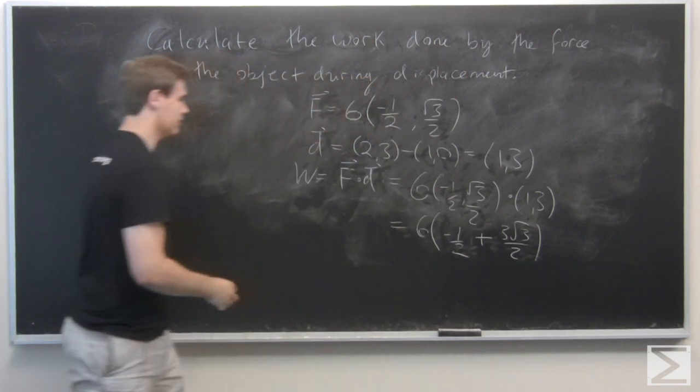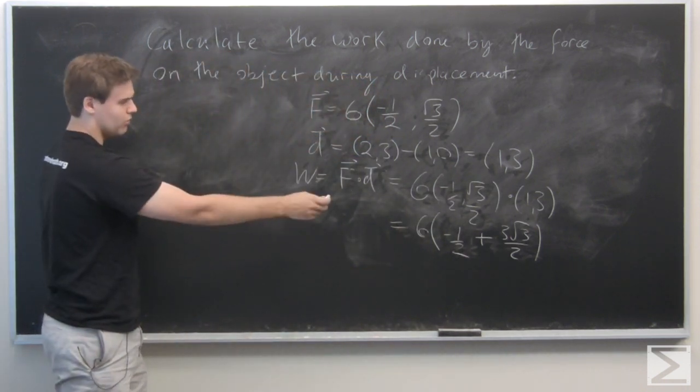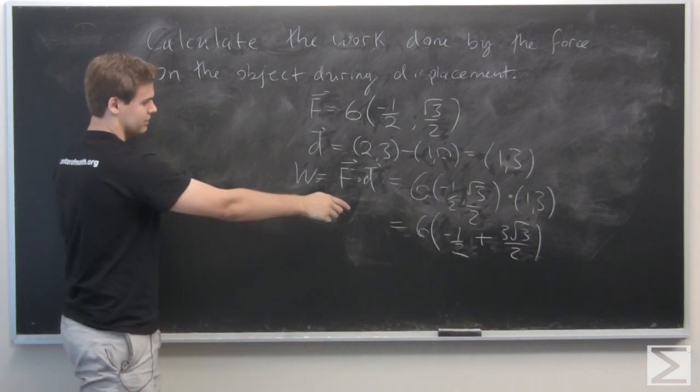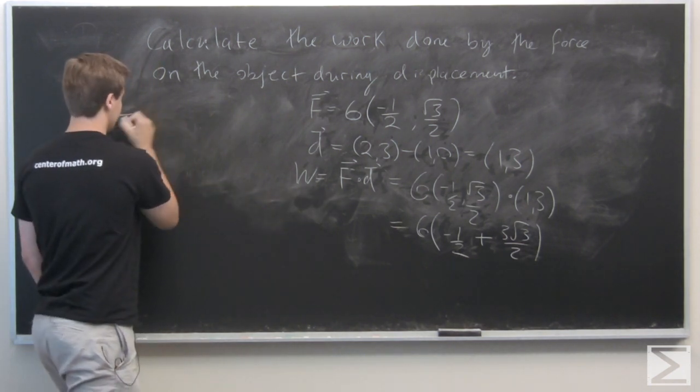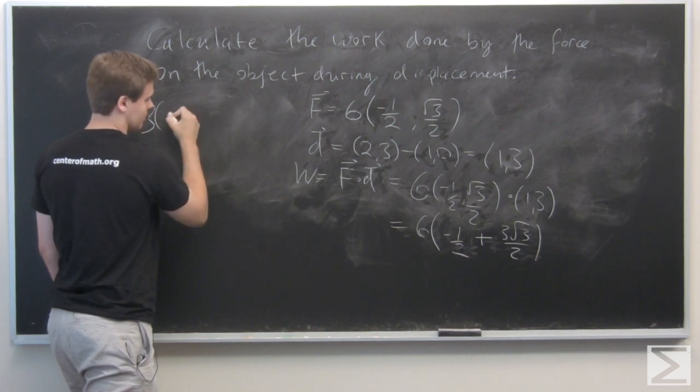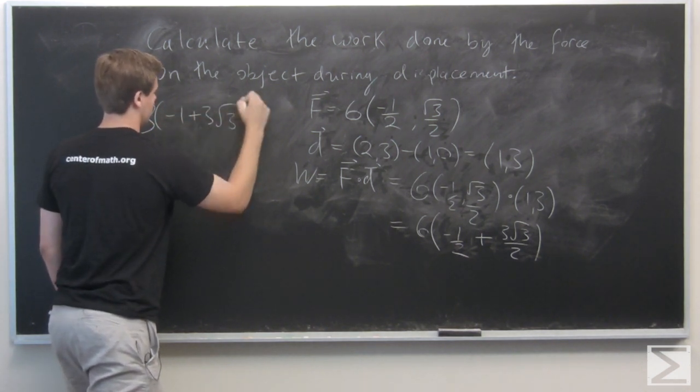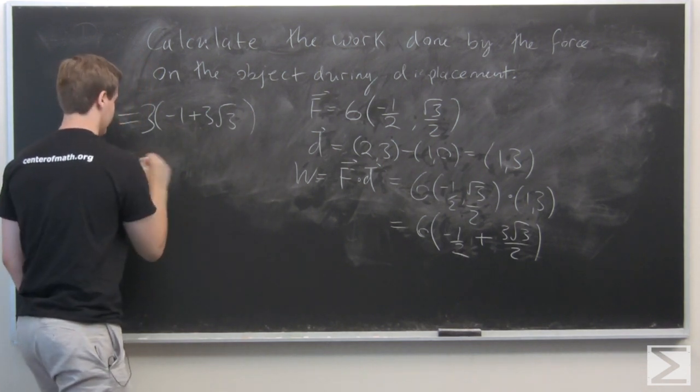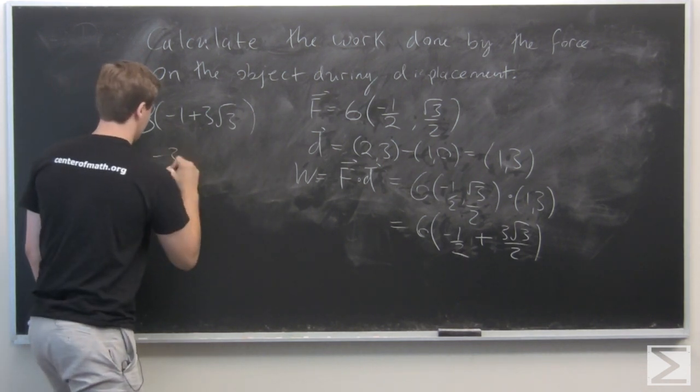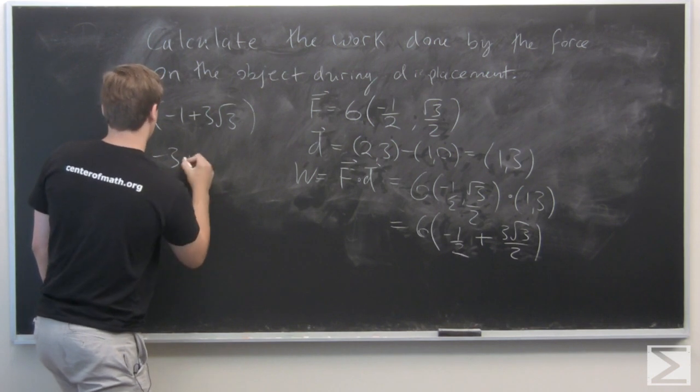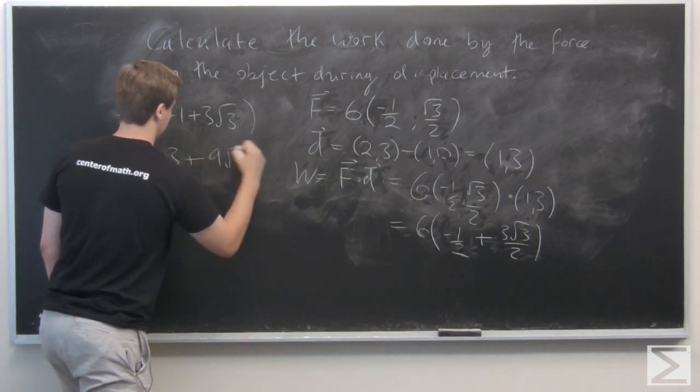And let's move over here. We can pull out the 1 half, and then we see that this is equal to 3 times minus 1 plus 3 root 3. And then finally, pulling the scalar in, we see that this is minus 3 plus 9 root 3.